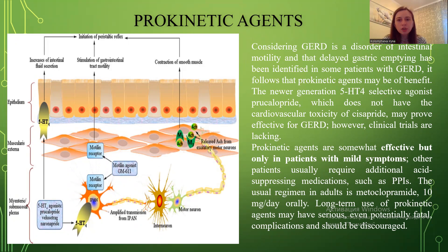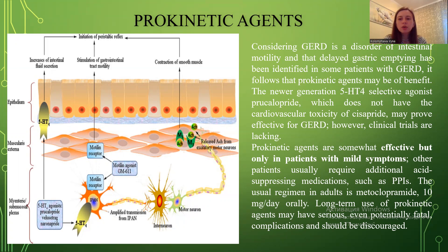Regarding prokinetic agents: since GERD is a disorder of intestinal motility and delayed gastric emptying has been identified in some patients, prokinetic agents may be of benefit. The newer generation 5-HT4 selective agonist prucalopride, which does not have the cardiovascular toxicity of cisapride, may prove effective for GERD; however, clinical trials are lacking. Prokinetic agents are somewhat effective but only in patients with mild symptoms; other patients usually require additional acid-suppressing medication such as PPIs.